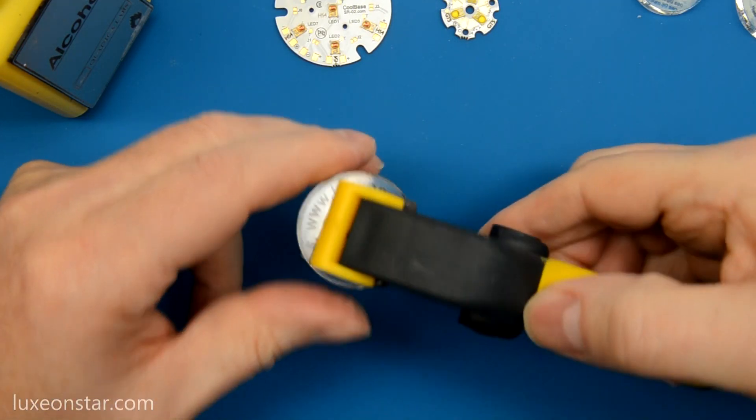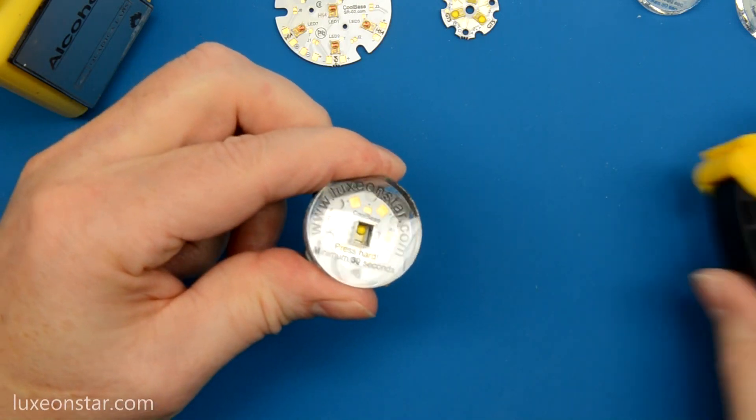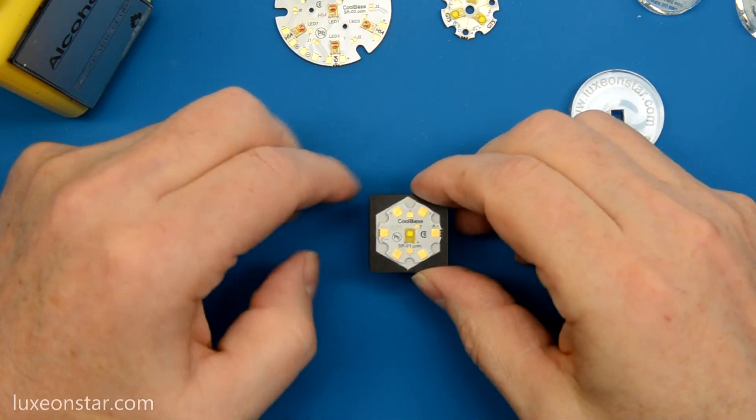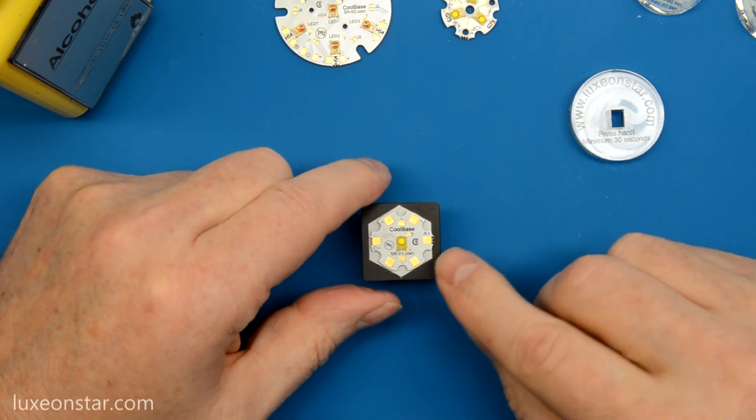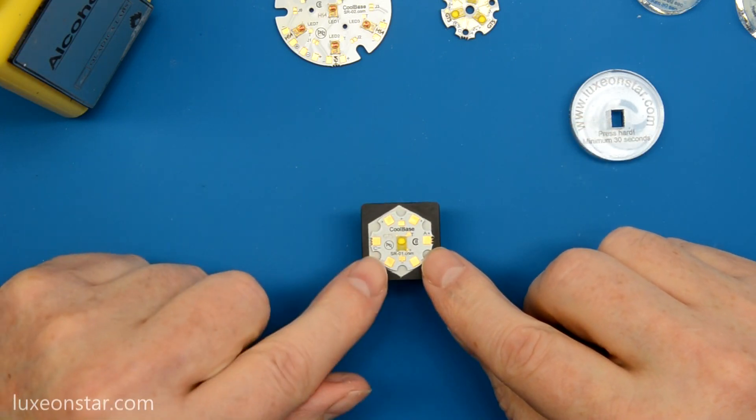After 30 seconds you can remove the press and the LED is ready to be used. As the LED is used, the performance of the thermal tape is actually going to improve.